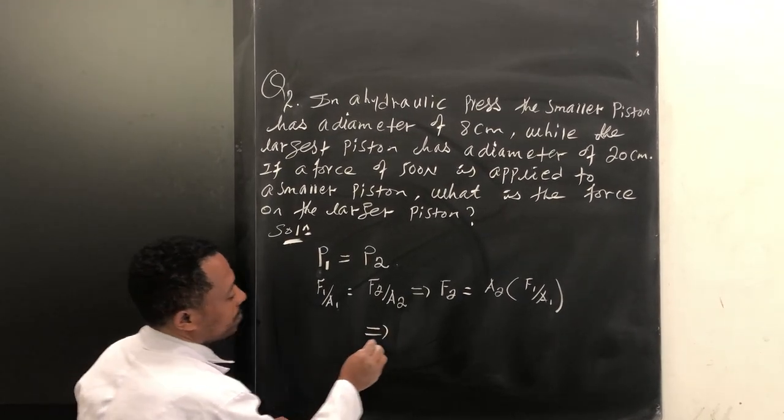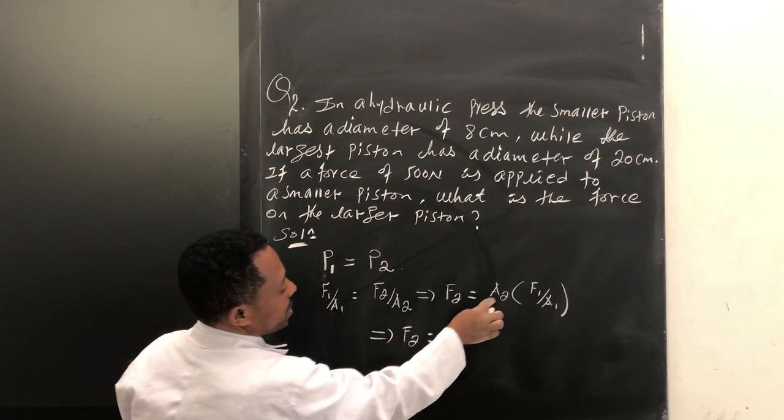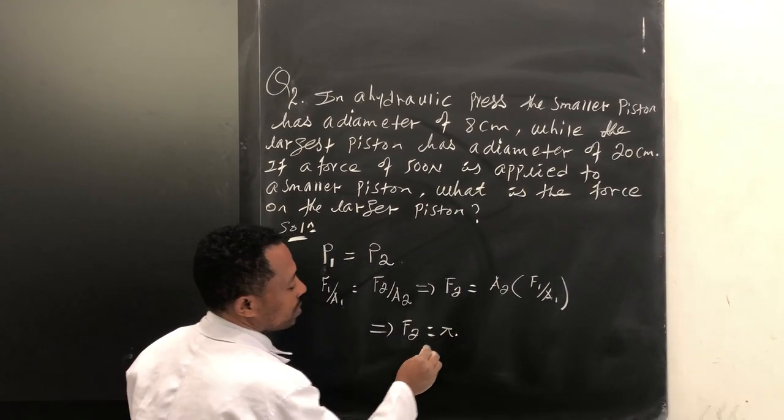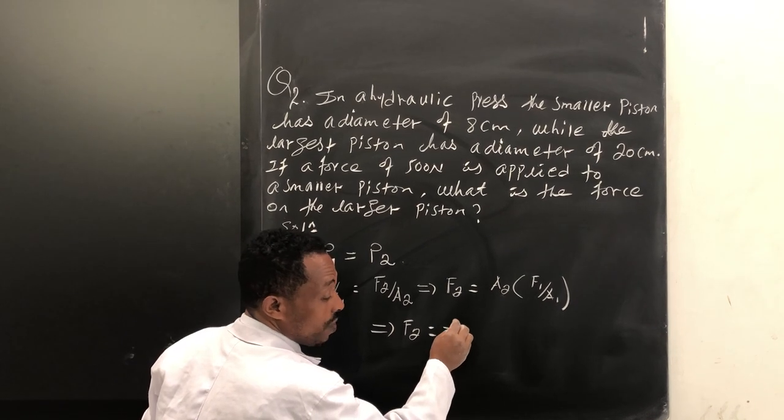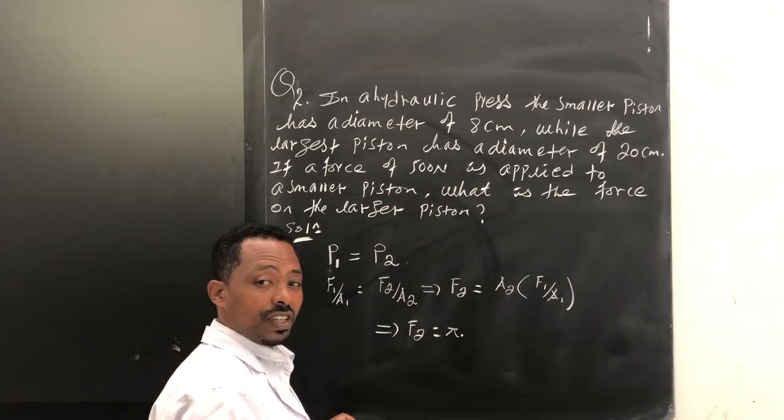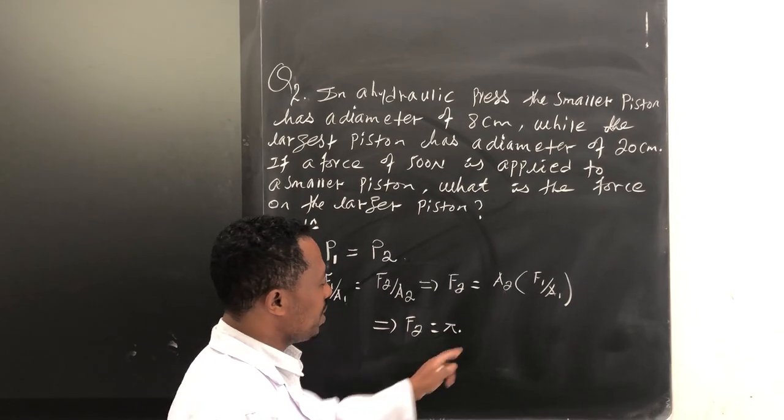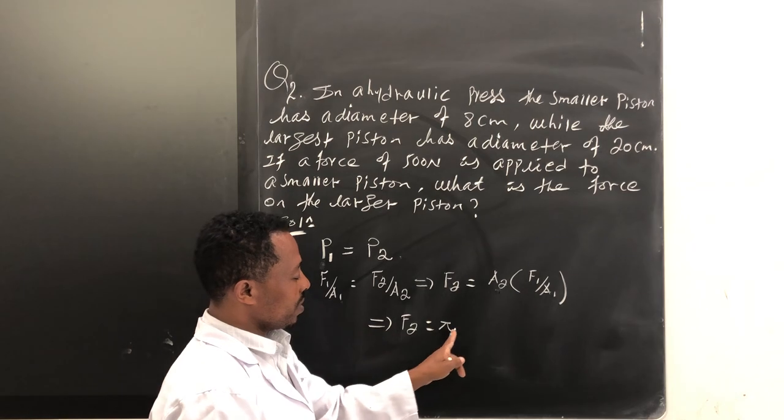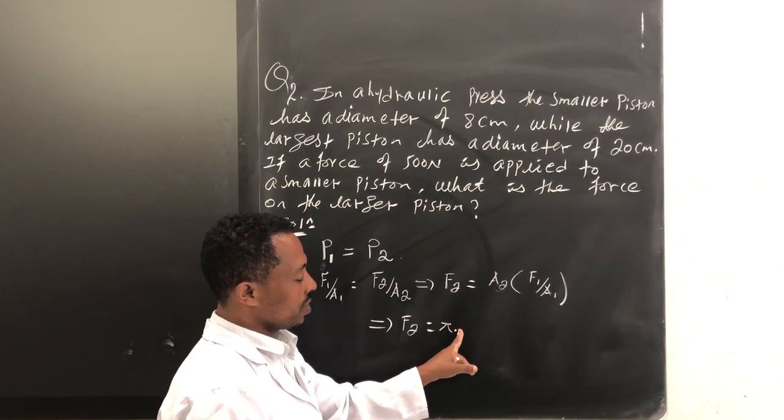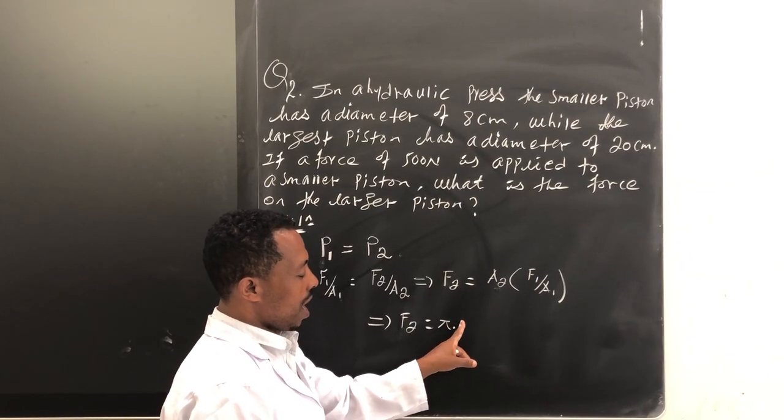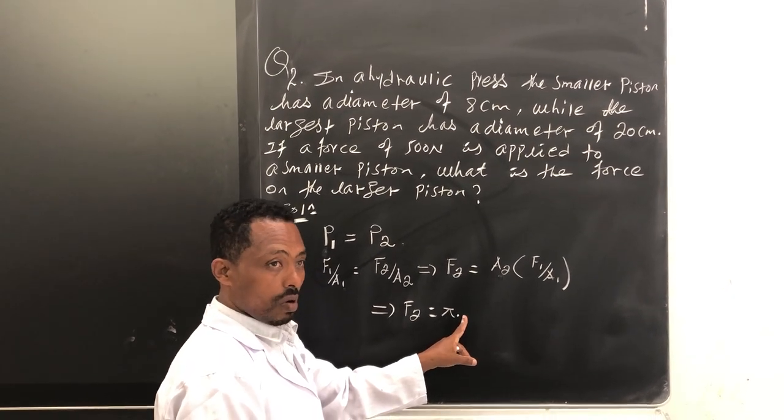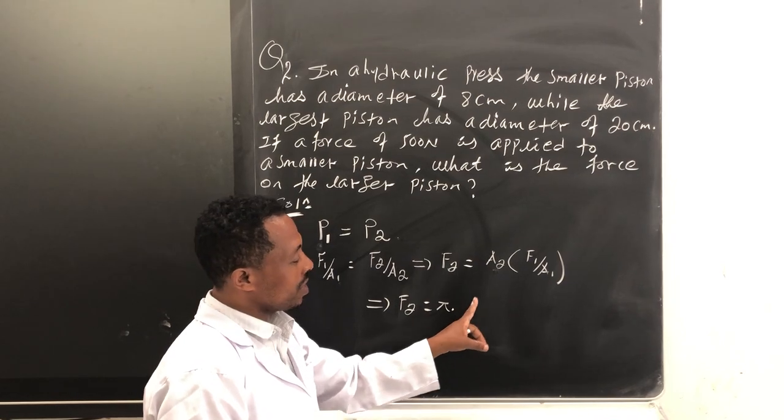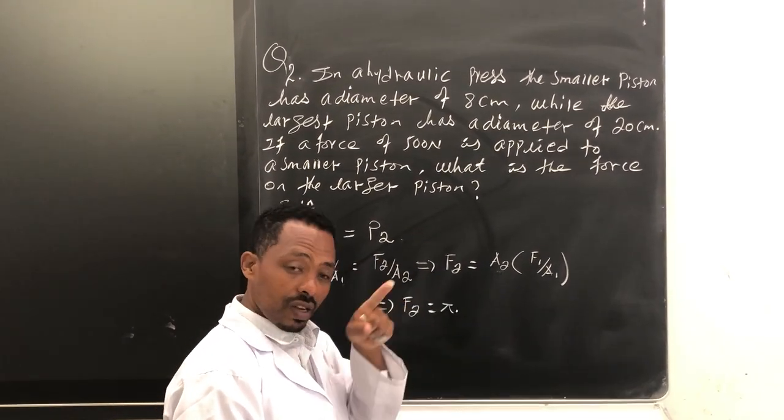Thus, F2 becomes A2 is pi times R2 squared. Okay? Half of D2 squared, or simply square of R2. That is, R2 is half of the diameter of the piston two.